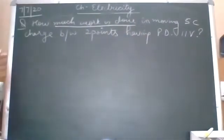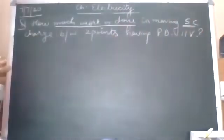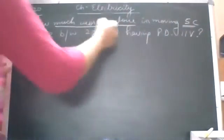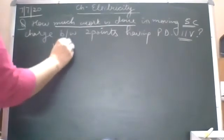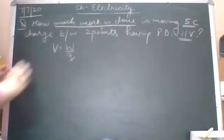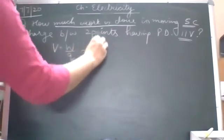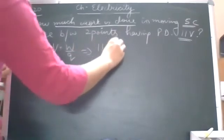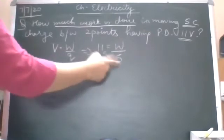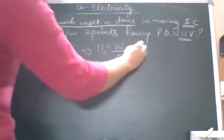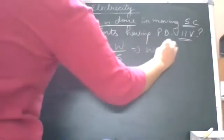Find how much work is done in moving 5 coulomb charge between two points having a potential difference of 11 volt. The question asks us to calculate work done. Charge is given as 5 coulomb, potential difference is 11 volt. The formula is V = W/Q. V is 11, Q is 5, simple cross multiplication. We get work done is 55 joules. Don't forget to mention the SI unit.